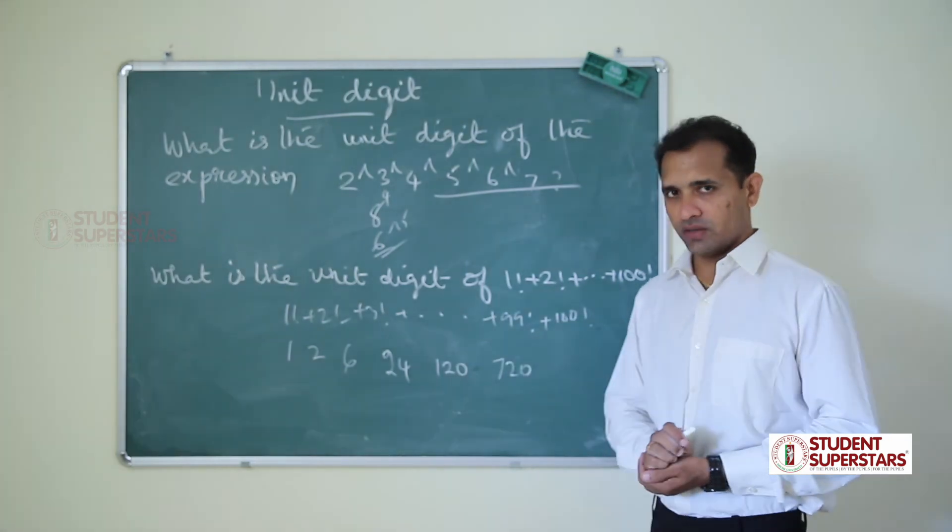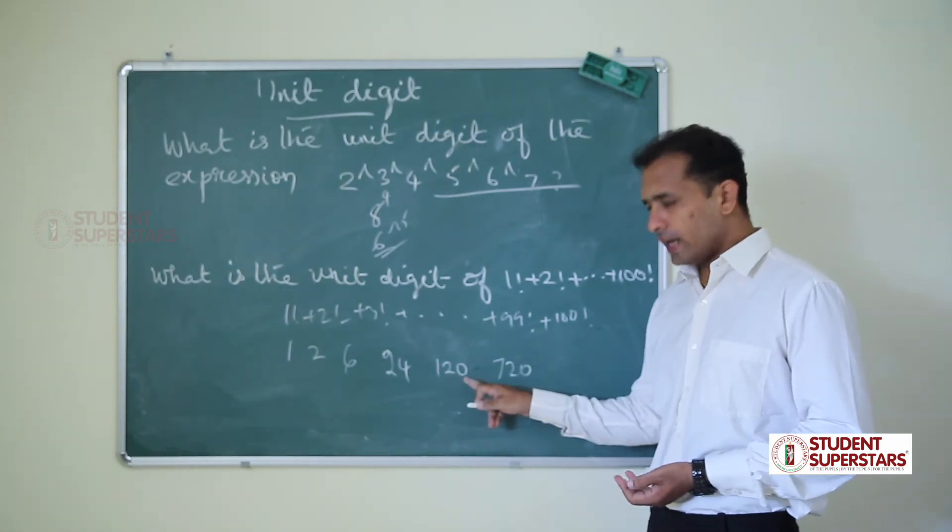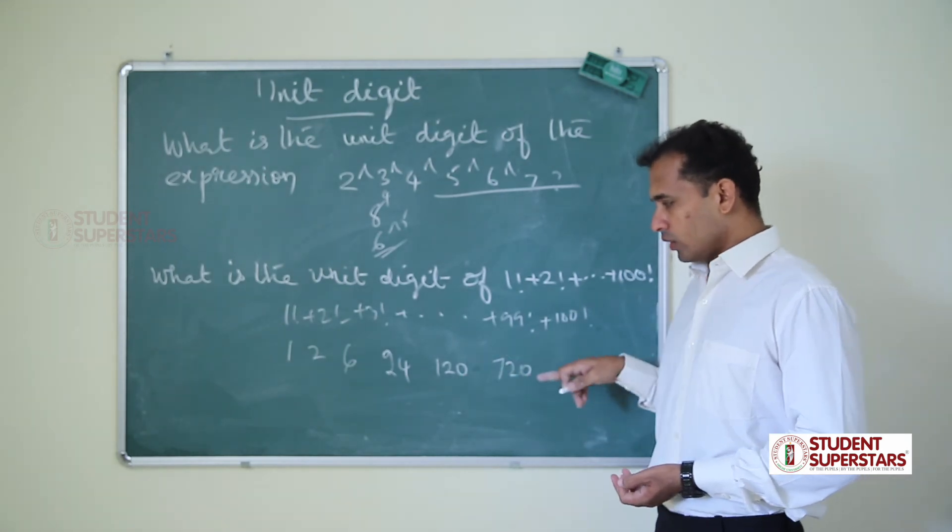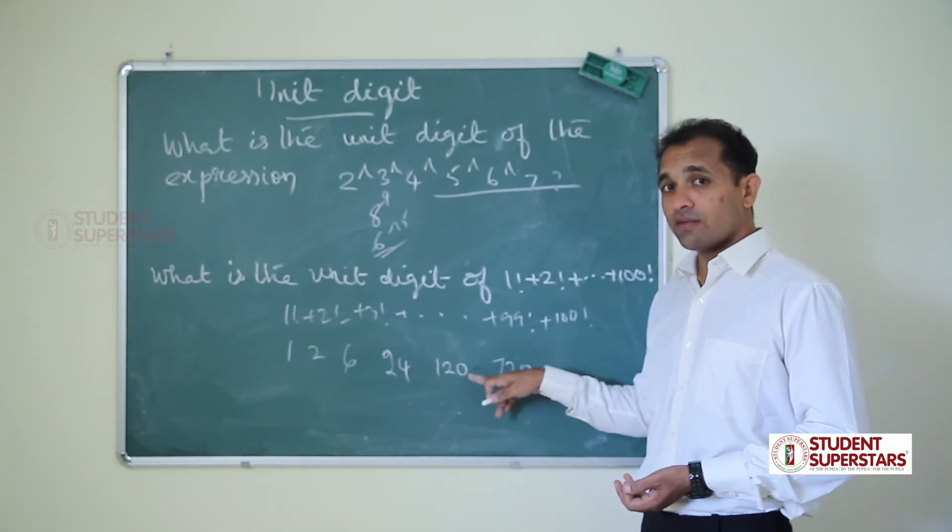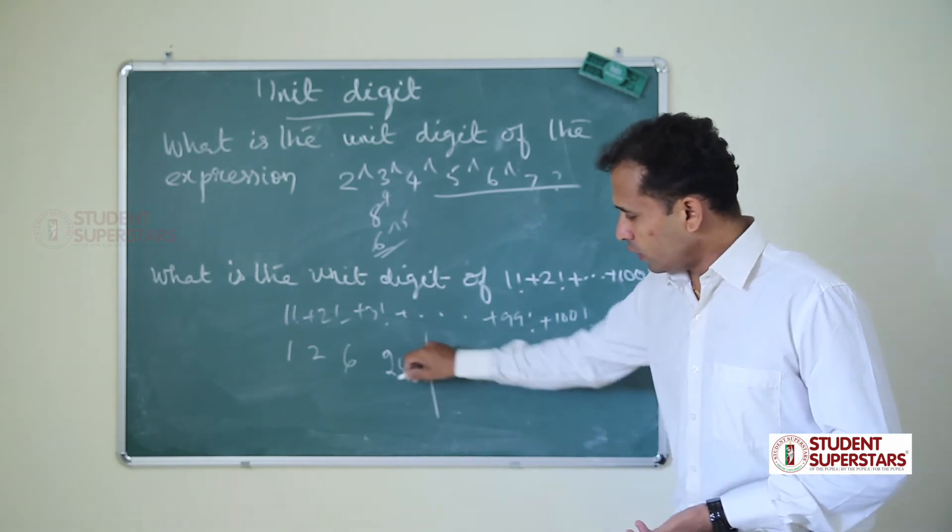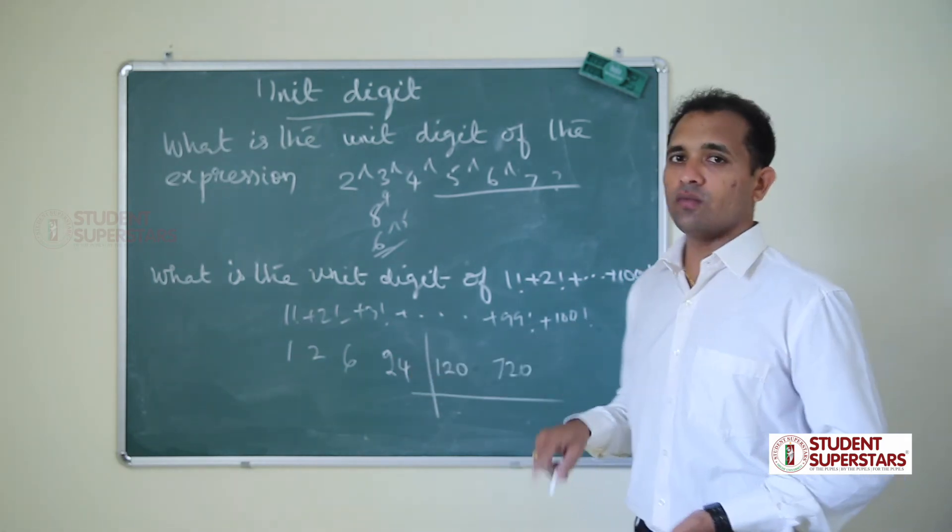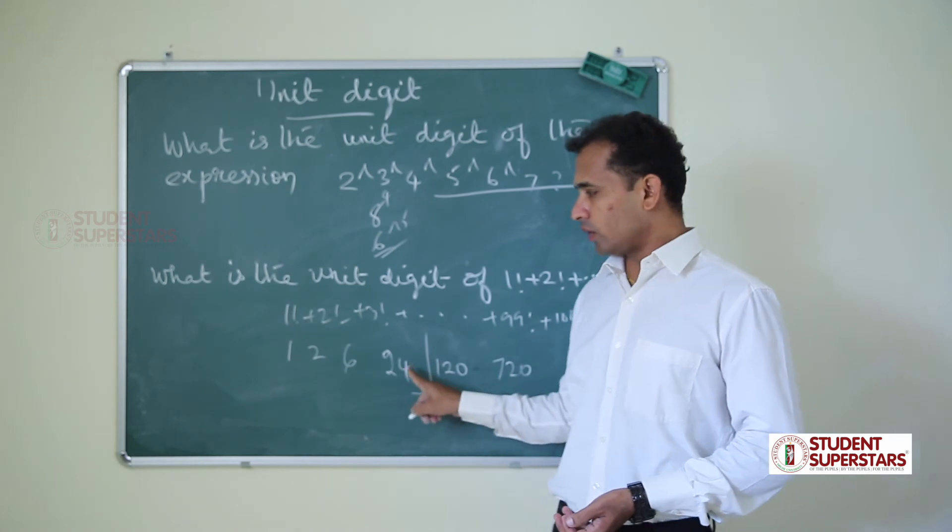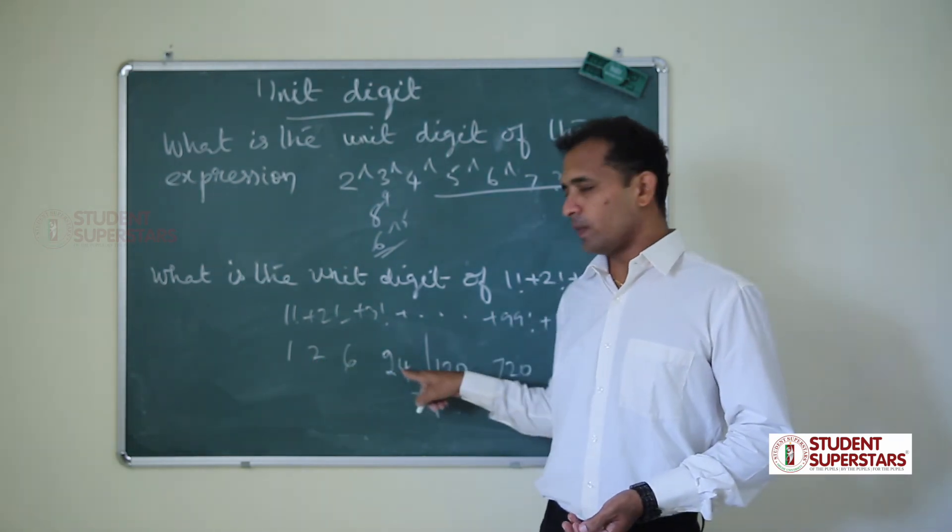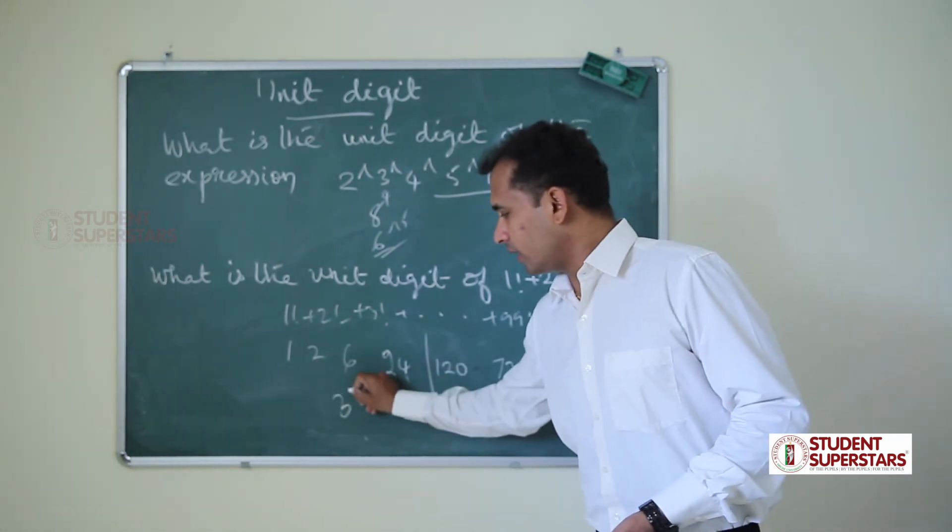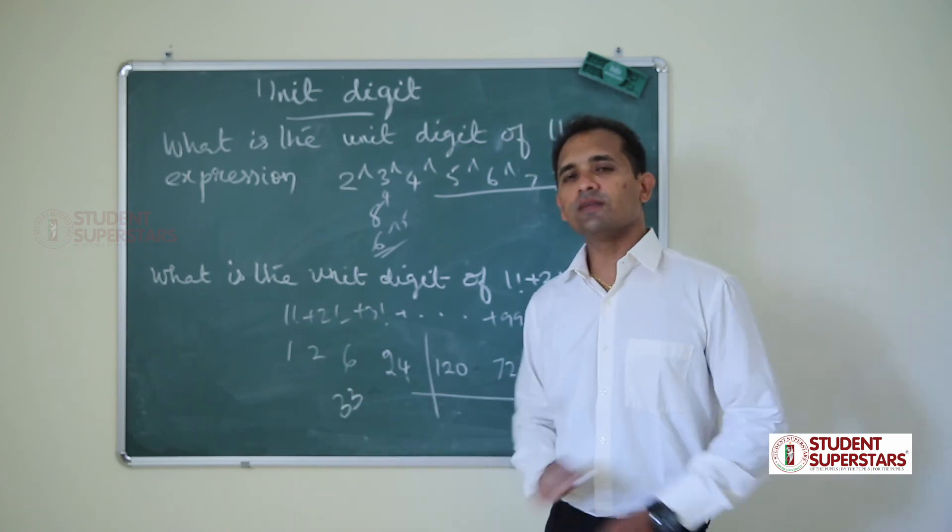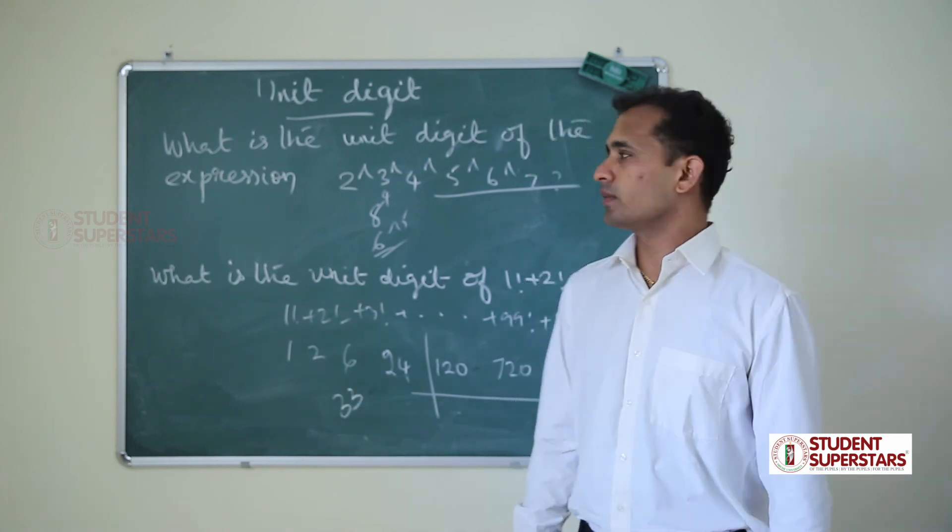We should find the unit digit. So after 120, for other factorial values, the unit digit is 0. So we don't need to calculate after 5 factorial. We have to calculate till 4 factorial: 1 plus 2 plus 6 plus 24 is 33. So the unit digit is 3.